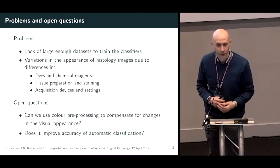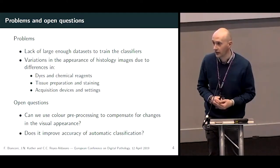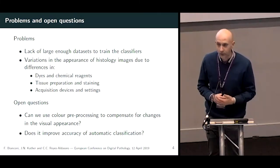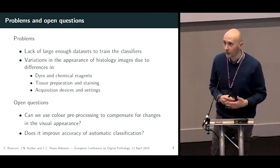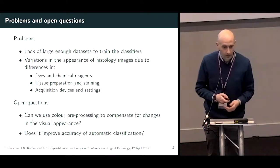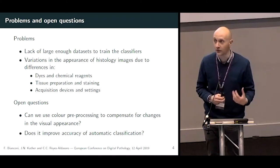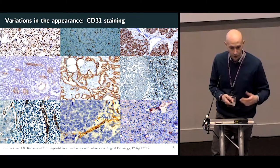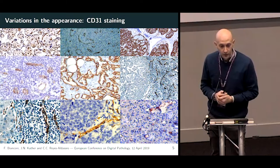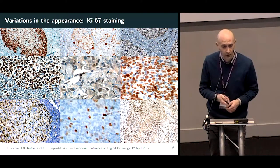Still, there are a number of problems that limit the application of automated methods on a large scale. Among them, the lack of large enough and well-stratified datasets to train the classifiers, and another is the variation in the visual appearance of tissue samples arising from different chemical reagents and dyes, different tissue preparation procedures, and different acquisition devices. In these slides we can see how the change in visual appearance can be quite huge — here we have three different types of staining, and in this work we focused on H&E staining.